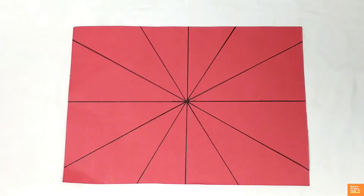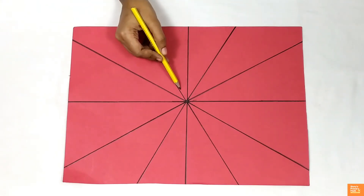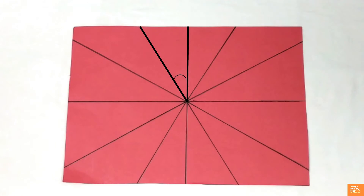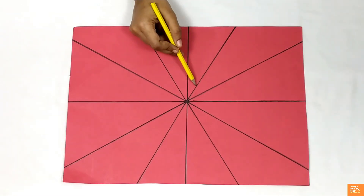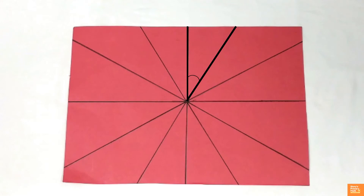Take a close look at the windmill. Can you see angles on the windmill? If yes, then spot an angle at the center of the windmill. Show the arms of the angle. How about its arm length — is it equal or unequal? Is there any angle similar to it? At this stage, challenge children to check whether the angles at the center of the windmill are equal.